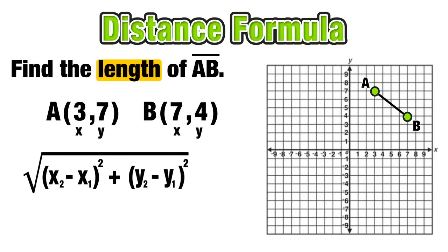Now again, A and B are both points with x and y coordinates. Since A is the first point, we'll give it the ones, x1, y1. And since B is our second point, we'll give it the twos, x2, y2. And now we're ready to use our formula.